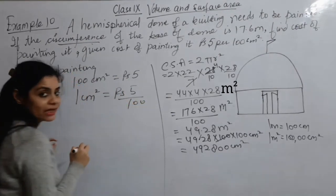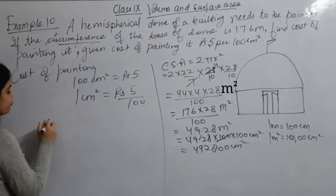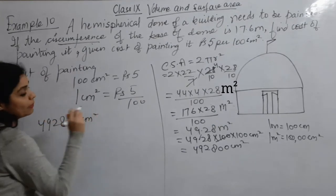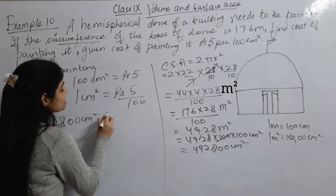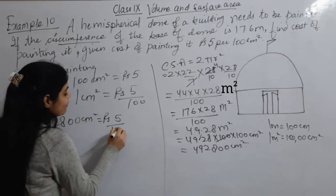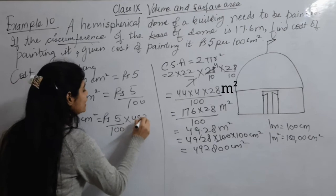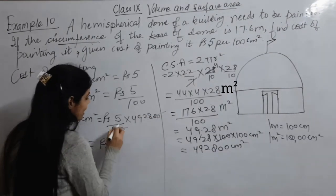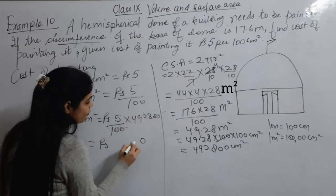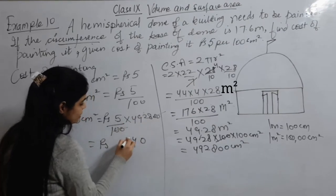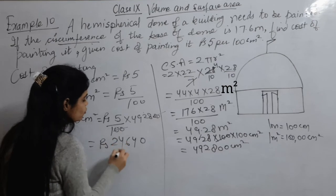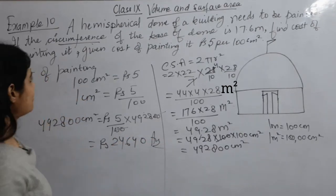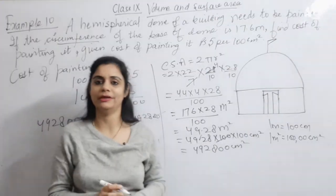So the total cost = (5/100) × 492800. The two zeros cancel, giving 5 × 4928 = 24640. So the cost of painting is ₹2464. This was Example 10, which is an important problem involving finding radius from circumference and then computing curved surface area and painting cost.